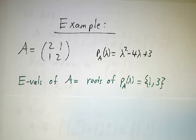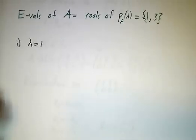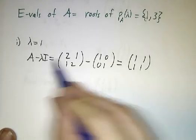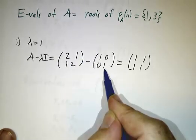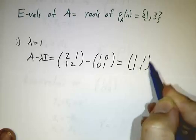And we do it one eigenvalue at a time. You can't do the whole thing at once. Each different eigenvalue requires a separate calculation. So we start with λ equals 1. When λ equals 1, A minus λ times the identity is just, well, that's A, and that's 1 times the identity.